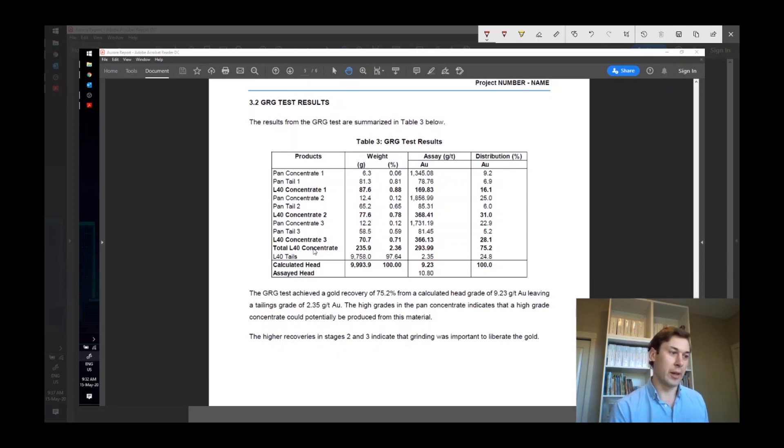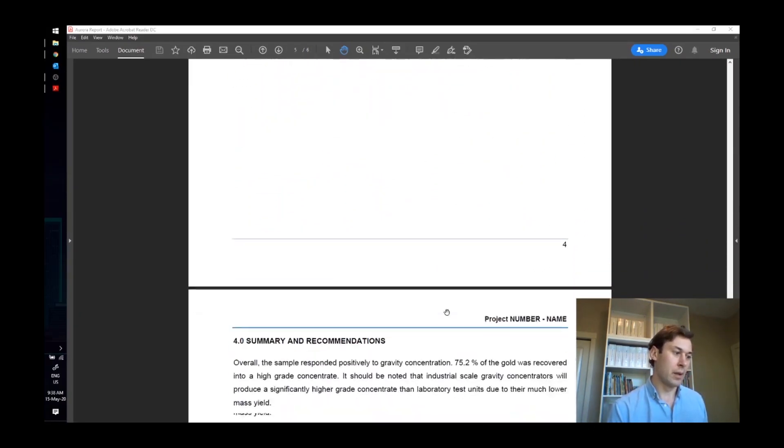In summary, you can look at the expectation of gravity concentrate grade in here, probably a bit higher because you're running much higher mass relatively speaking through the industrial machines, and an overall gravity recovery here. If you for whatever reason make a decision to go with a much coarser grind, you can look at this plus this, for example, or some factor in between here if the grind is going to be somewhere in between.